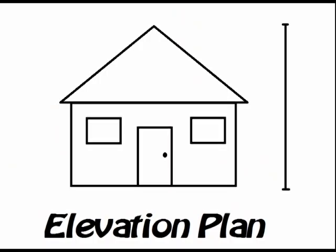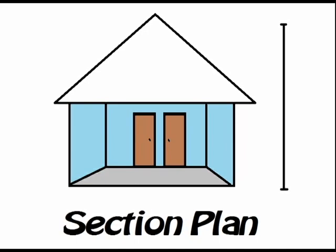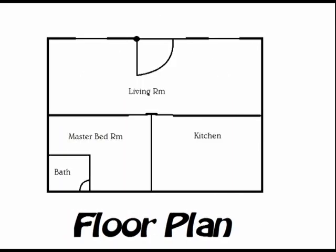First, they use what's called an elevation plan — this shows how high the building will be once completed. Second, they use what's called a section plan — this shows the inside of the building and its different sections or levels.